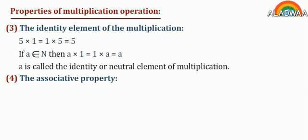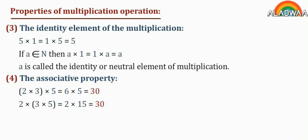Property 4: the associative property of multiplication. For example, (2 times 3) times 5 equals 6 times 5, which equals 30. And 2 times (3 times 5) equals 2 times 15, which also equals 30.